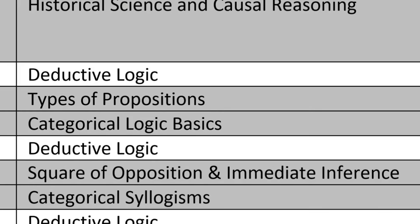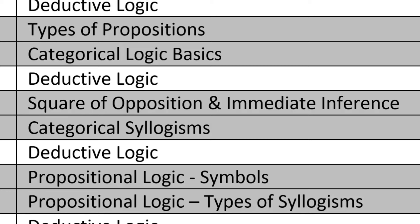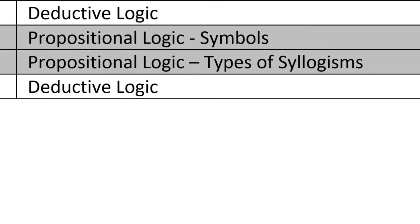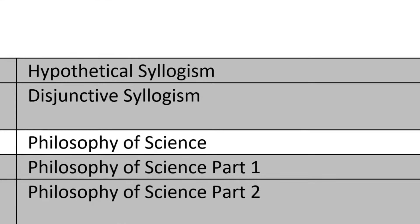In the deductive logic section we'll look at categorical logic, the square of opposition, mediate inference, categorical syllogisms, and then move on to propositional logic — symbolization of arguments, types of propositional arguments such as hypothetical and disjunctive syllogisms and dilemmas. We're not going to be doing deductive proofs, quantificational logic, or modal logic — just the basics.